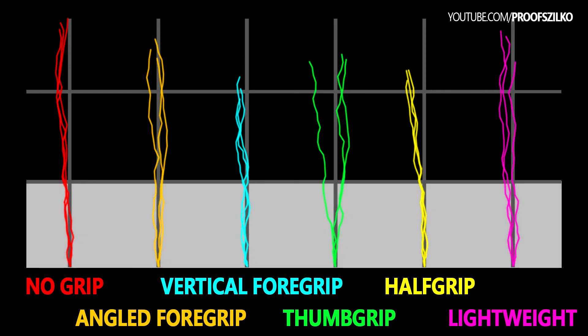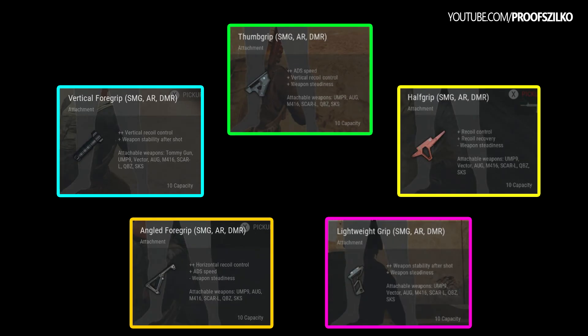If you take only the first third of the spraying pattern into consideration, it seems like except the thumb grip, all the other grips are useful for full auto spraying. And additionally you have to take into consideration all the other attachment stats, for example the ADS speed, the weapon stability, and all the other key information which can decide if you're gonna win or lose the battle.